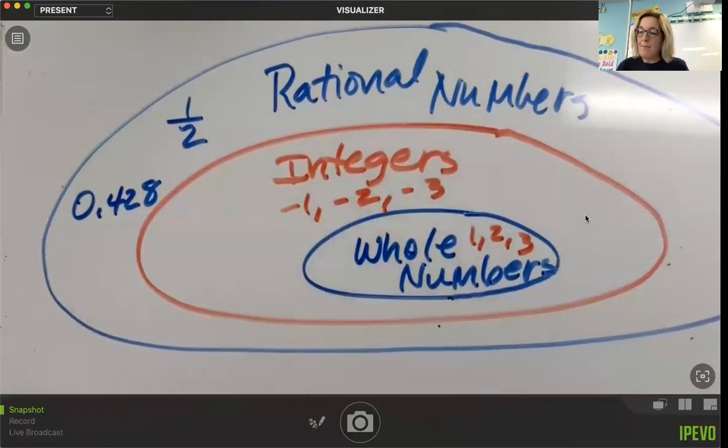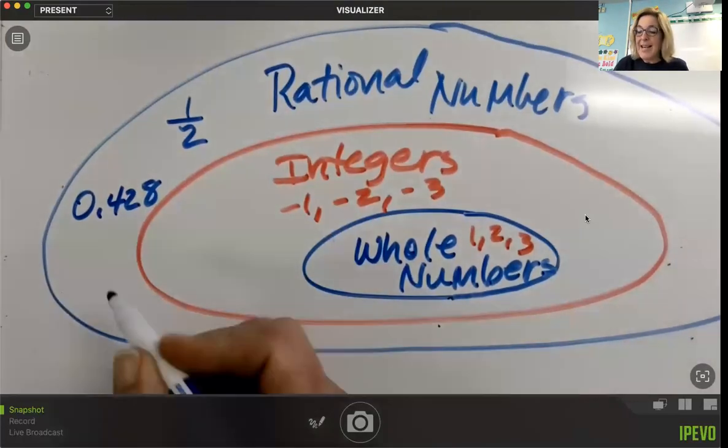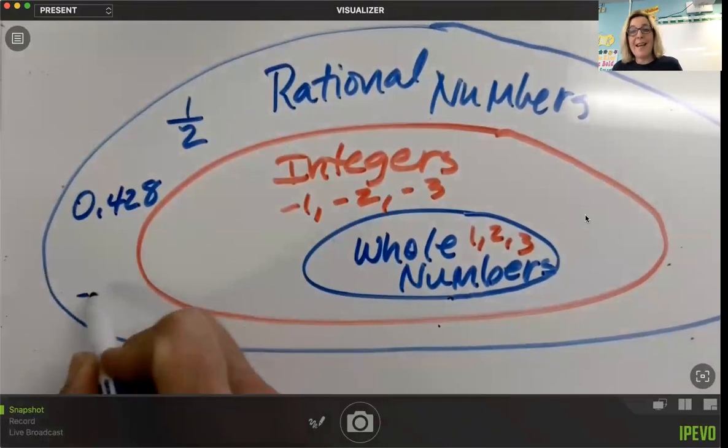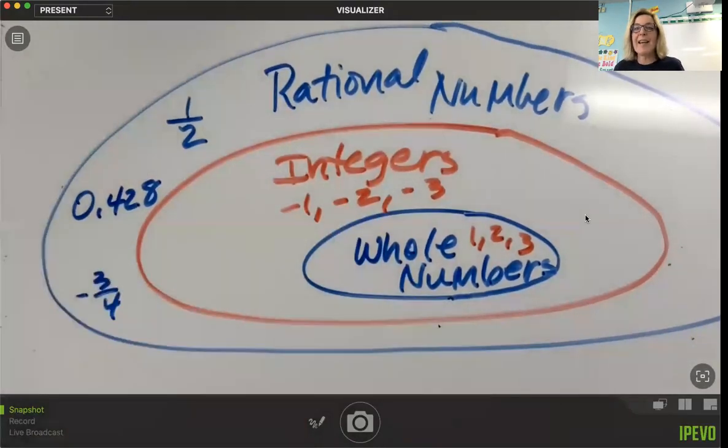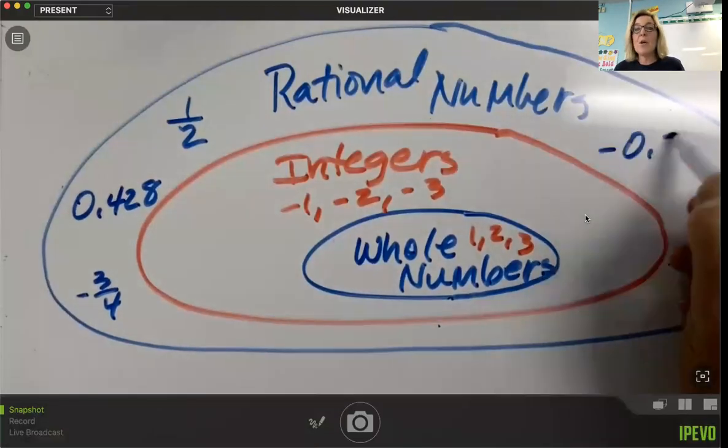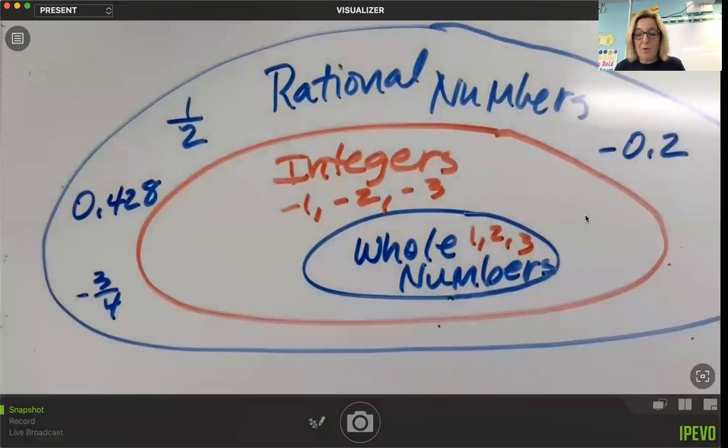So what other rational numbers can you think of? How about negative three-fourths? Yeah, we can have negative parts, negative fractions, negative decimals, negative two-tenths in decimal form, or it could be written in fraction form also.